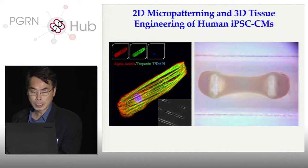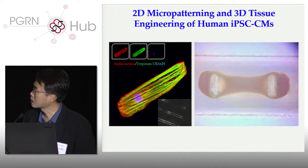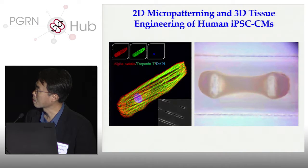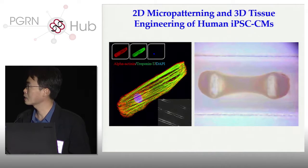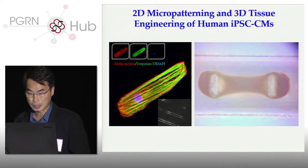We can also do 2D micropatterning as well as 3D tissue engineering of these human iPSC cardiomyocytes. This is a single iPSC cardiomyocyte — you can see the nucleus here, the sarcomere, the nice striation. What we call a 'beef jerky' is essentially a chunk of muscle generated by iPSC cardiomyocytes attached to two posts. This chunk of muscle is contracting, and this allows us to calculate the contractile force, the diastolic relaxation, and also the rhythmogenicity in response to different medications.